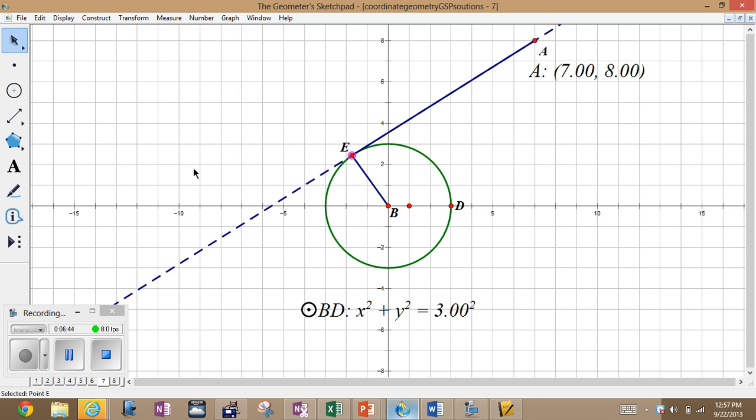Now one other thing to consider. One distance we can easily find is the distance AB. So we can easily compute the distance AB using the distance formula. That then effectively wants to be the hypotenuse of a right triangle, because we need a right angle here at E if we are to have a tangent. So we know that EB is going to be three. We can compute AB by distance formula. And then using the Pythagorean theorem, we could find the length of AE.